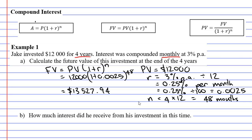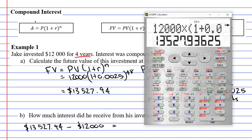We know that he started with $12,000. And by the end of the four years, he had $13,527.94. So if we take the future value and subtract the present value, it'll show you how much money he made, or how much interest he made out of this deal.